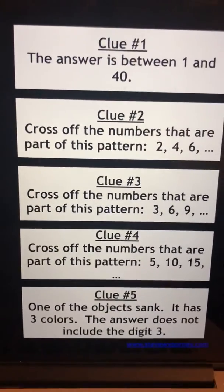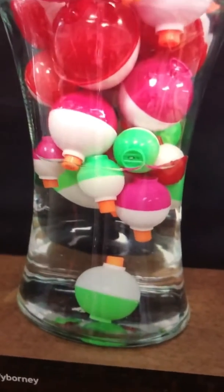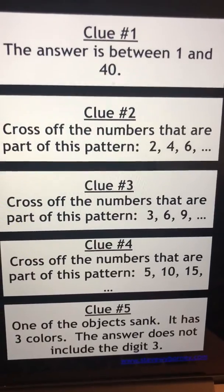And clue five says one of the objects sank. It has three colors. See the three colors there: green, white, and orange. The answer does not include the digit three.